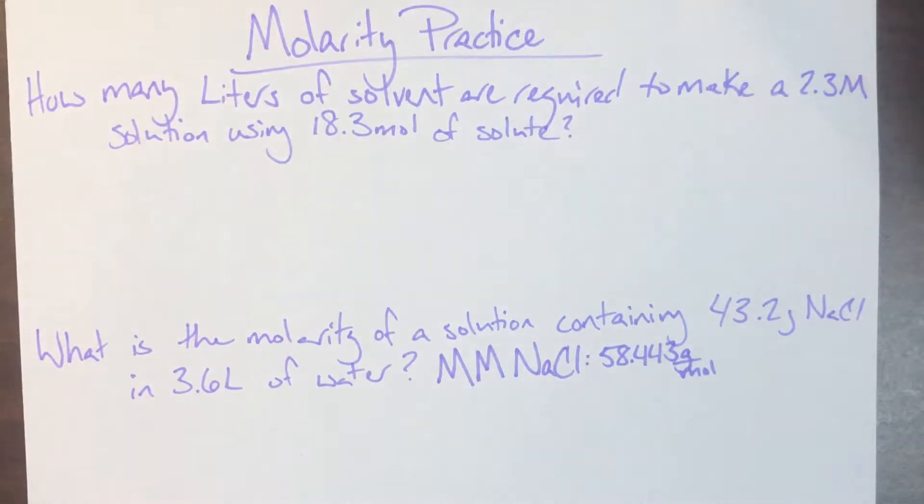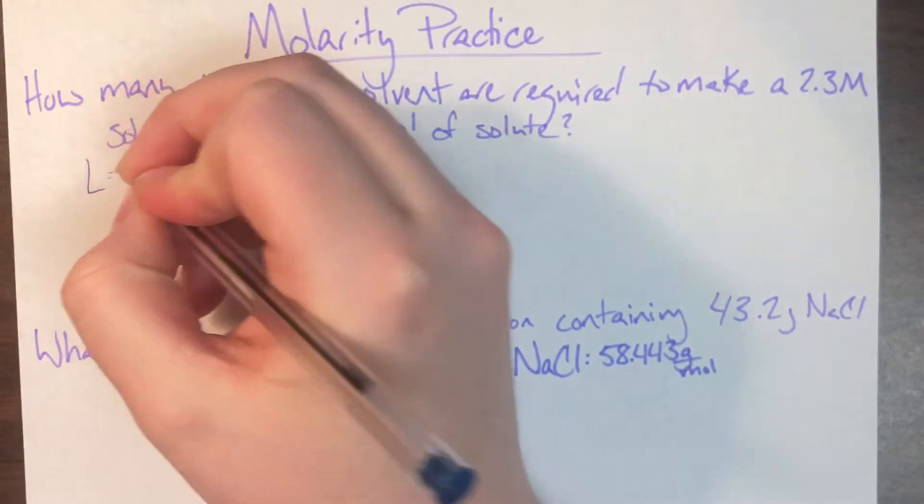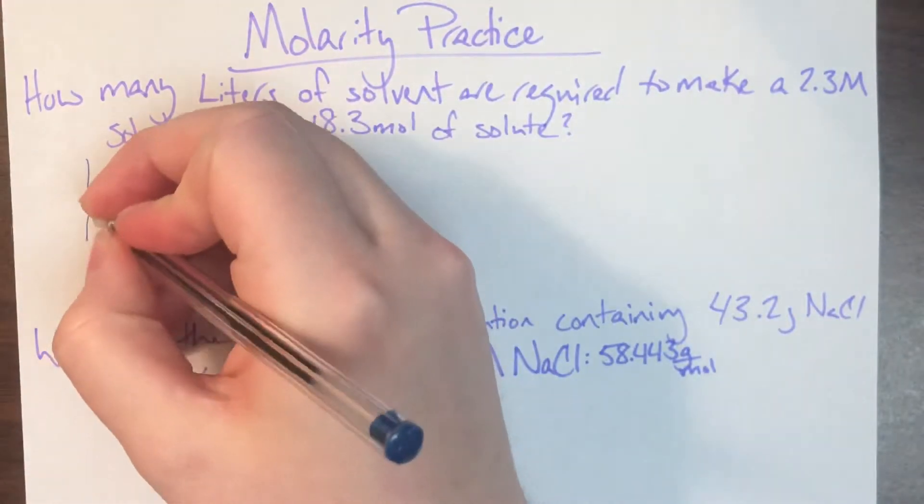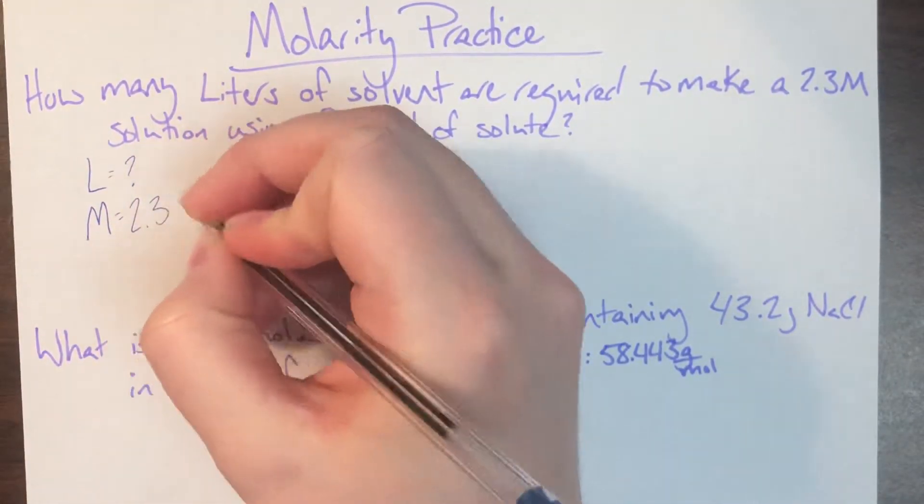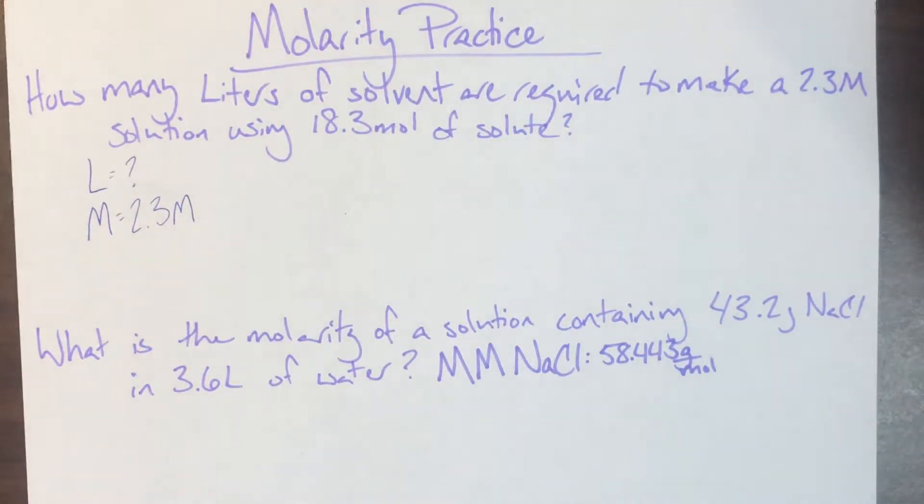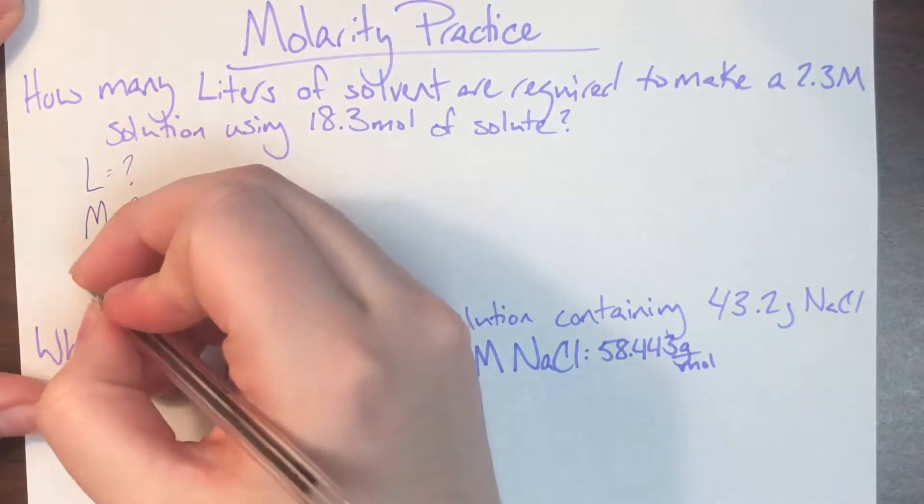Today we're going to be talking about how to do some molarity practice problems. This very first problem says how many liters of solvent, so we know that we do not know my liters of solvent, are required to make a 2.3 molar solution. So we know that our molarity is going to be 2.3 using 18.3 moles of solute.